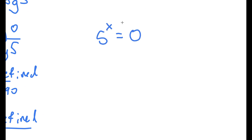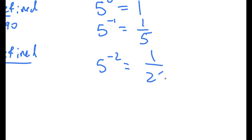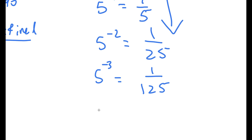Another way to prove this is our equation was 5 to the power of x equals 0. Well, 5 to the power of 0 is equal to 1. 5 to the power of negative 1 is equal to 1 over 5. 5 to the power of negative 2 is equal to 1 over 25. 5 to the power of negative 3 is equal to 1 over 125. This goes lower and lower, but as the exponent decreases the number decreases — however, it's never going to approach 0. No matter how low the exponent might be — even 5 to the power of negative 1 trillion — it's never actually going to be 0.